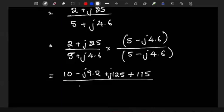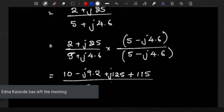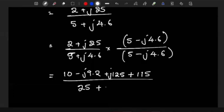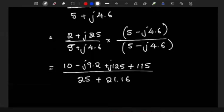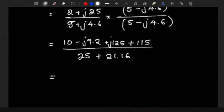5 squared is 25. Then j squared there is going to be negative as well, making this positive. Then 4.6 squared, this is going to be 21.16.